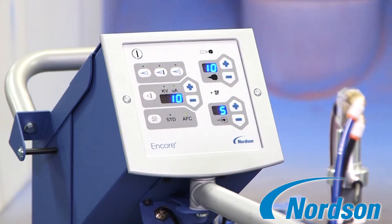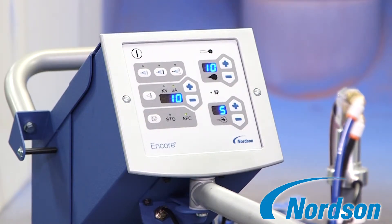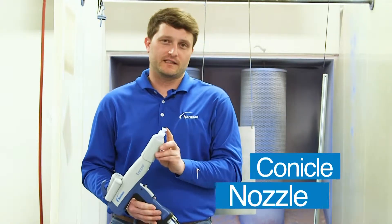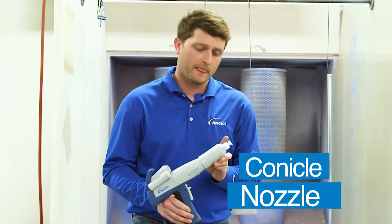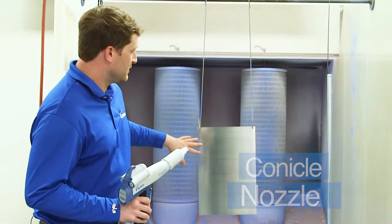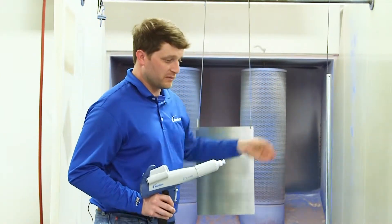For this setup, we're using an Encore LT vibratory box feeder with a blue Exalta metallic powder coating. We've got a 19 millimeter conical nozzle on the handgun, and we're going to coat a flat panel compared to a piece of tubular metal.